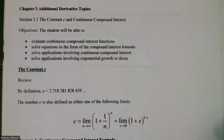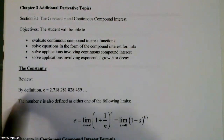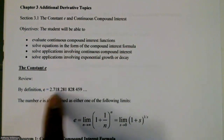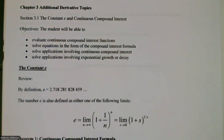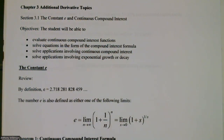First, we're going to look at the constant e. In one of the videos for this course, I did talk about the constant e. By definition, it is this irrational number: 2.718281828459, going on forever without end. The number e is also defined as either one of the following limits: the limit as n approaches infinity of (1 + 1/n) to the nth power, or the limit as s approaches 0 of (1 + s) to the 1/s power.